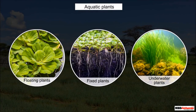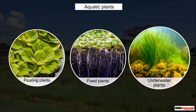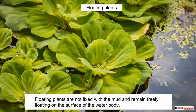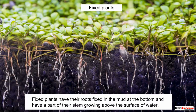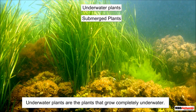Aquatic plants can be further grouped into three types: floating plants, fixed plants, and underwater plants. Floating plants are not fixed with the mud and remain freely floating on the surface of the water body. Fixed plants have their roots fixed in the mud at the bottom and have part of their stem growing above the surface of water. Underwater plants grow completely underwater and are also called submerged plants.